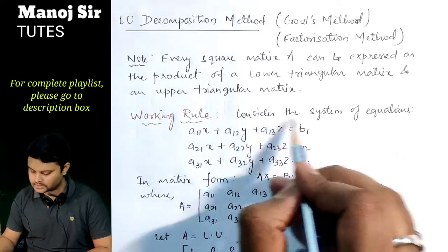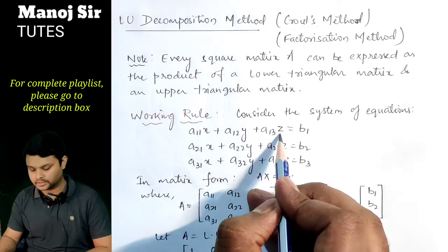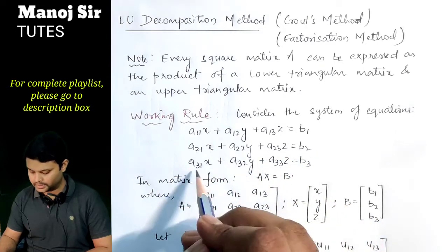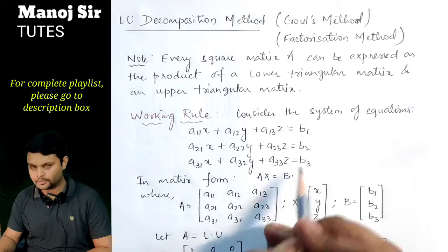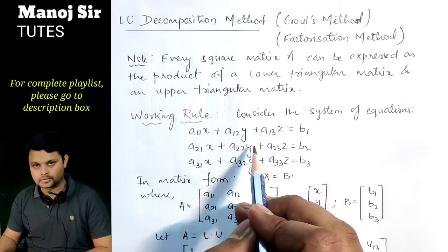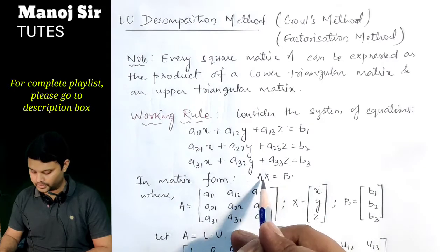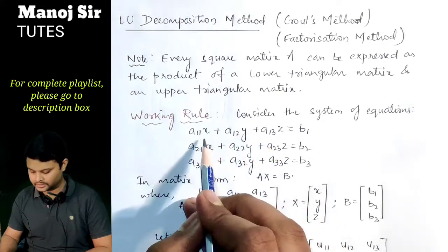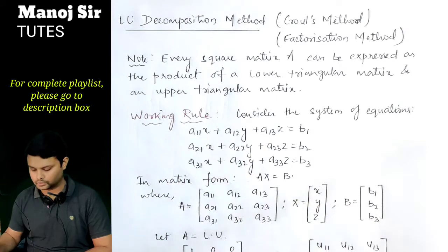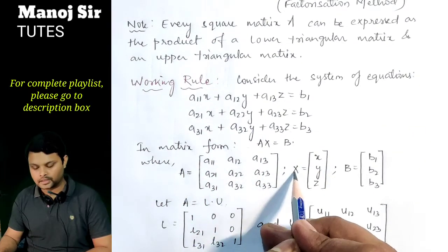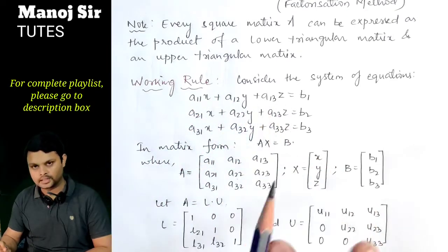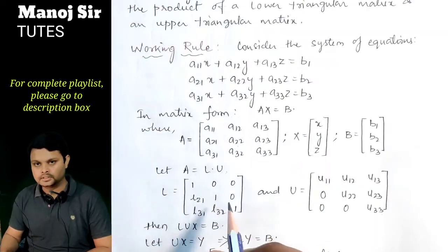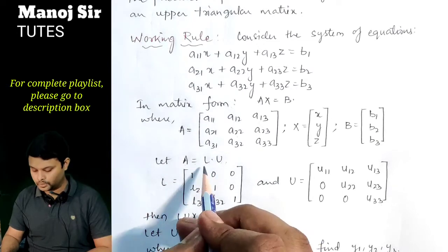Consider the system of equations: a11·x + a12·y + a13·z = b1; a21·x + a22·y + a23·z = b2; a31·x + a32·y + a33·z = b3. We can write this system of equations in matrix form as Ax = b, where capital A is the coefficient matrix — the coefficients of x, y, and z, that is a11, a12, a13, a21, and so on.